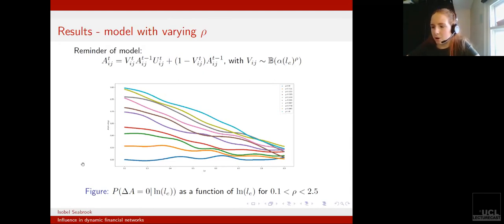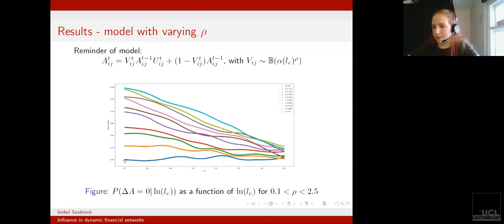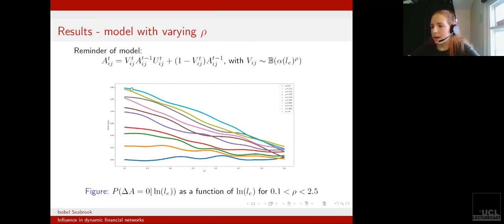If we look at a value of rho of zero, the probability for edges to remain unchanged is pretty much constant across the entire range of LE values observed for the edges in the network. Whereas when we move to the very highest value of rho, edges with a very low value of LE are much more likely to remain unchanged than those with a high value of LE.